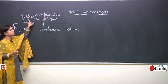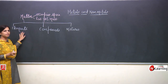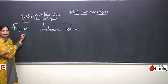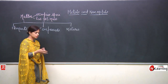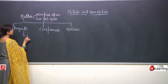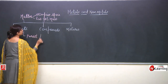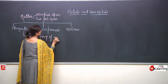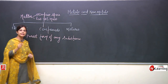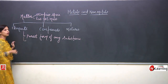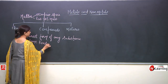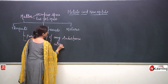Matter can be present in the form of elements, compounds and mixtures. Now what do we mean by elements? We can say an element is the purest form of any substance, and it is made up of the same kind of atoms.